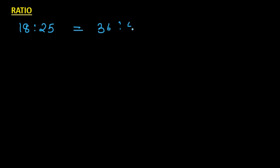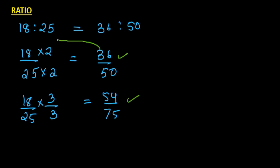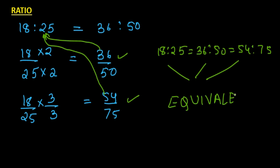A ratio of 18 is to 25 can also be written as 36 is to 50 — we multiplied numerator and denominator by 2. We can also multiply by 3 to get 54 is to 75. All of these ratios, when reduced to lowest form, give us 18 over 25. So we say that 18 is to 25, 36 is to 50, and 54 is to 75 are all equivalent ratios — just like equivalent fractions, we have equivalent ratios.